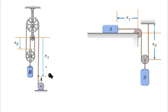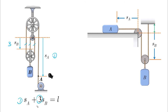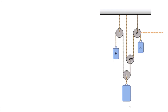A quick conclusion to save time: in the left figure, A is connected to one segment of the cable and B is connected to three segments. On the right side, A is connected to one segment and B is connected to two segments. Using this analogy, you can find the kinematic relationships by inspection.